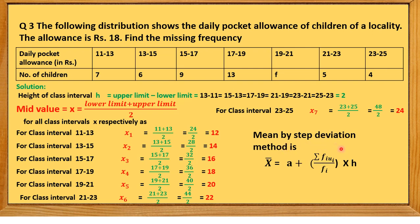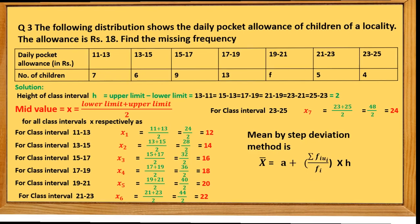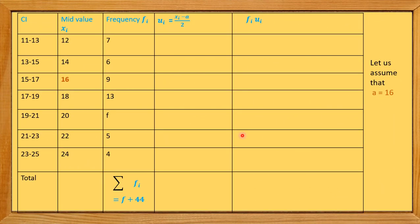We find the mean using the Step Deviation Method formula: x̄ = a + (Σfiui / Σfi) × h. We now draw the table. The mid-values obtained are 12, 14, 16, 18, 20, 22, 24 for class intervals 11–13, 13–15, 15–17, 17–19, 19–21, 21–23, 23–25 respectively.